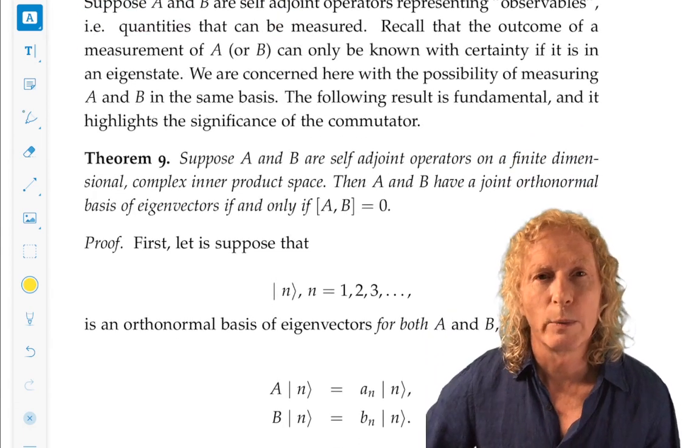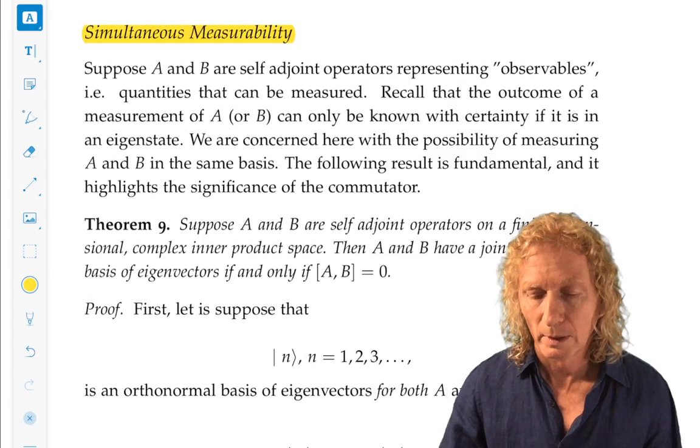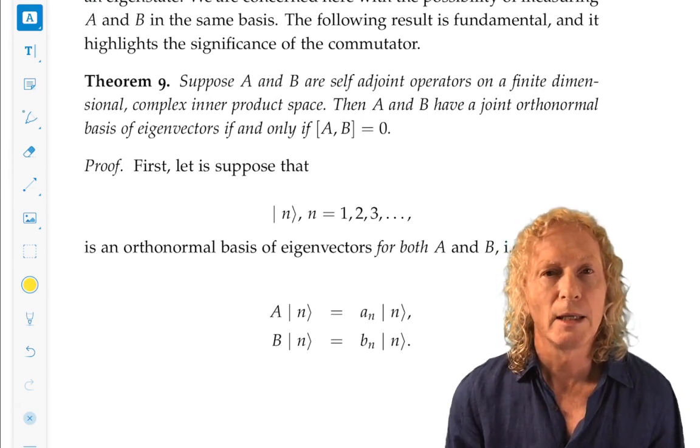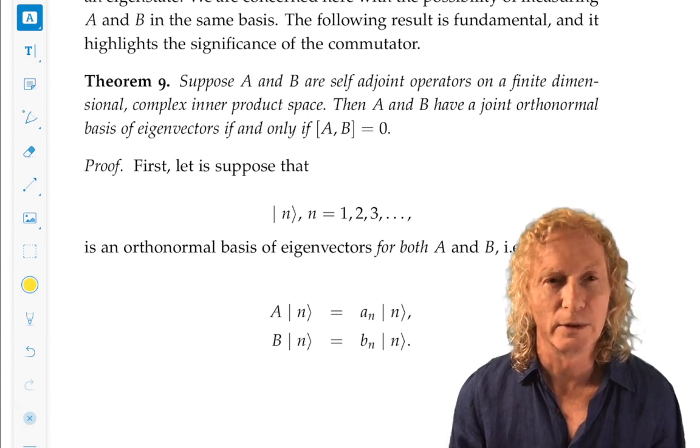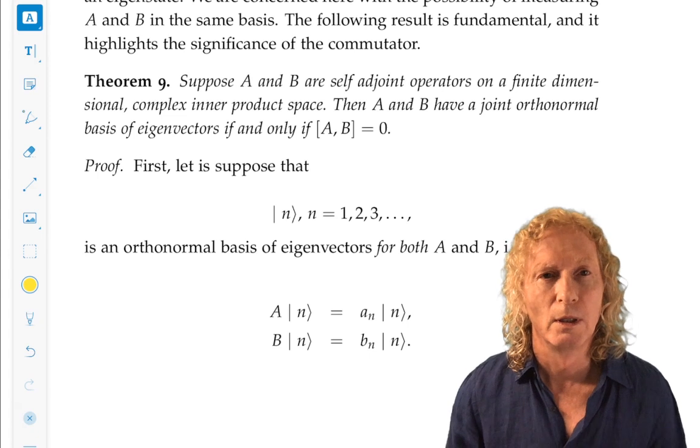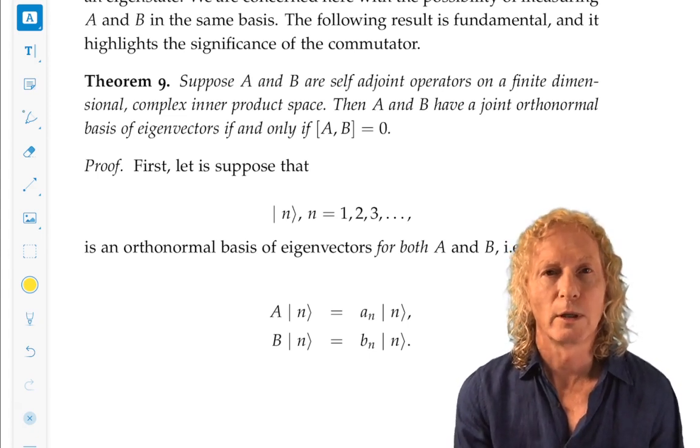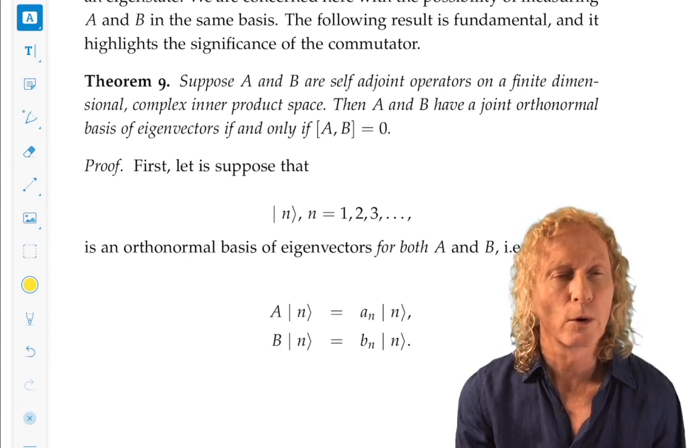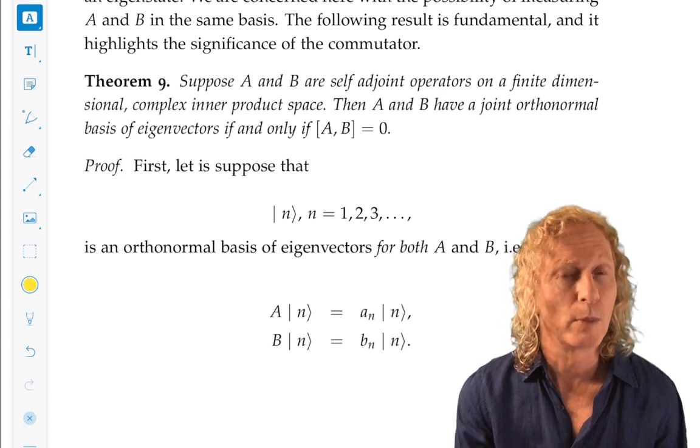So, what we would like to find are necessary and sufficient conditions for which A and B, two self-adjoint operators, they're going to be finite dimensional in this case because I'm actually going to have a proof of the result, two self-adjoint operators on a complex inner product space, conditions for which they have a joint orthonormal basis of eigenvectors. That is a single basis of eigenvectors that are eigenvectors for both A and B.